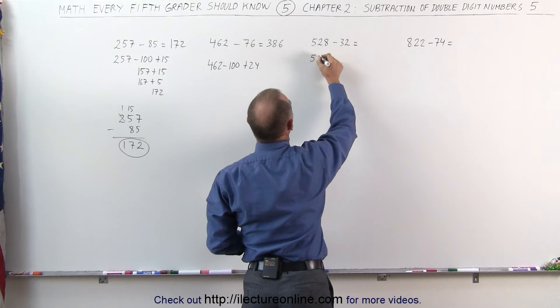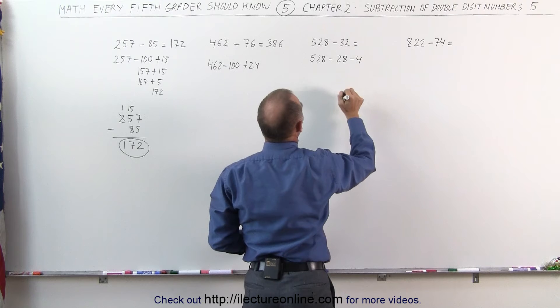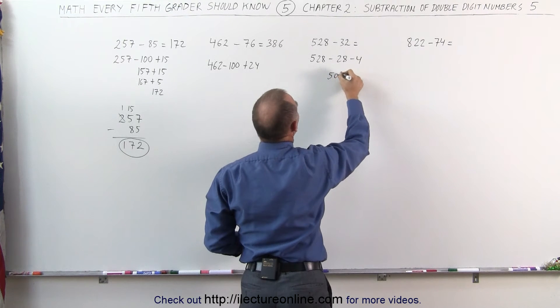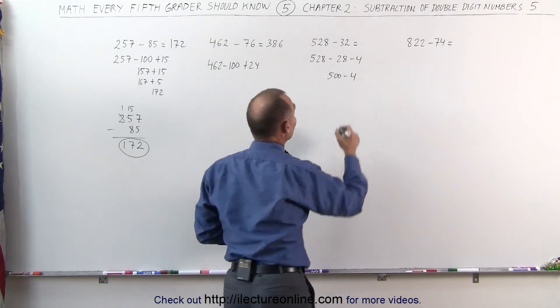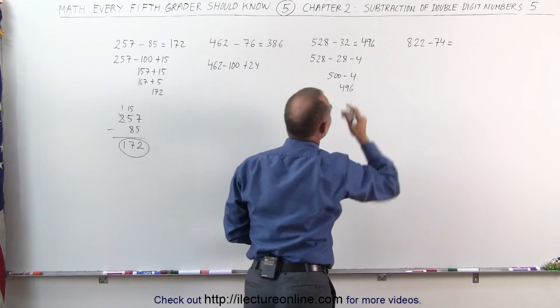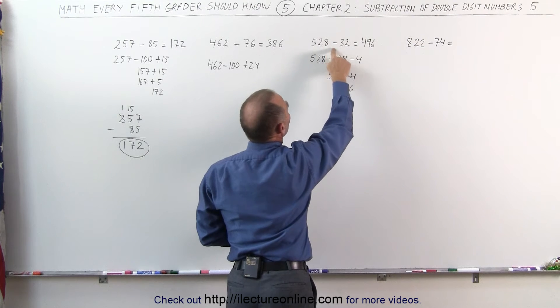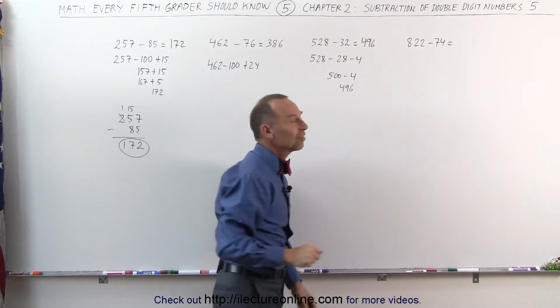I can think of it as follows: 528 minus 28 and minus 4, because 528 minus 28 gives me 500 and I subtract 4 from that and that's easy to do. 500 minus 4 is simply 496 and that is the answer, 496. So the way I look at it is, I subtract 28 first that gives me 500. Now I have to subtract 4 more. 500 minus 4 is 496 and that's the answer.